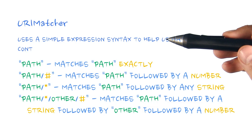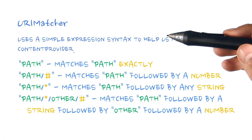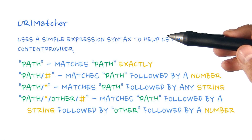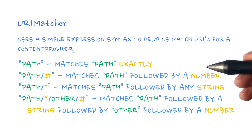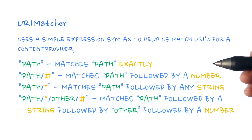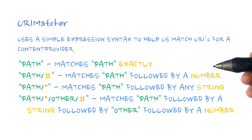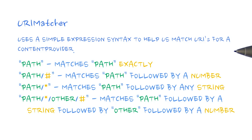Android provides a URI matcher class to help match incoming URIs to the content provider integer constants. This is important because we need to have a way of knowing which type of URI is passed in to our content provider so that we can perform the requested operation.